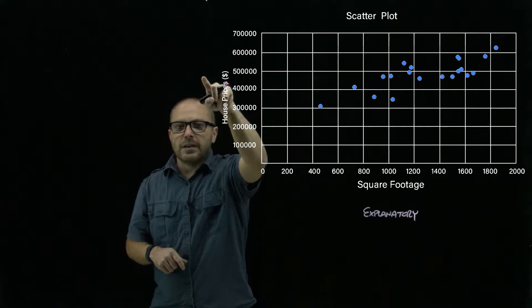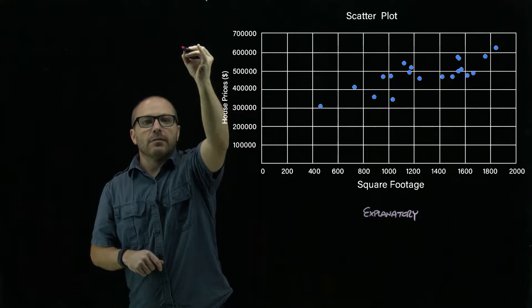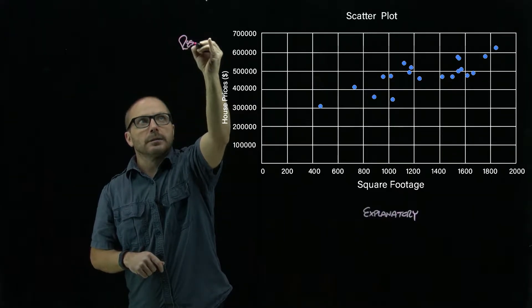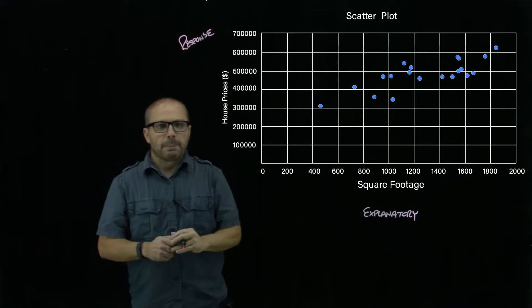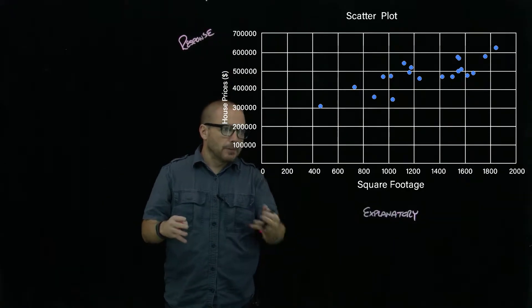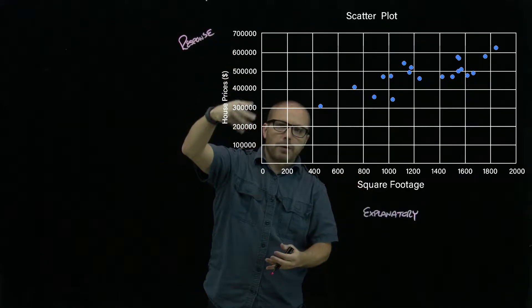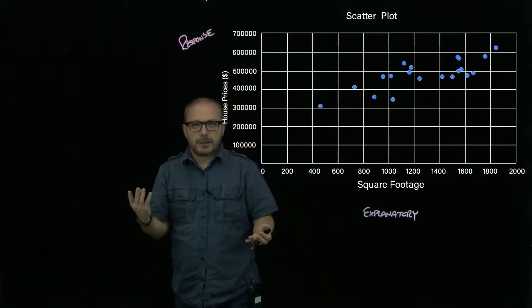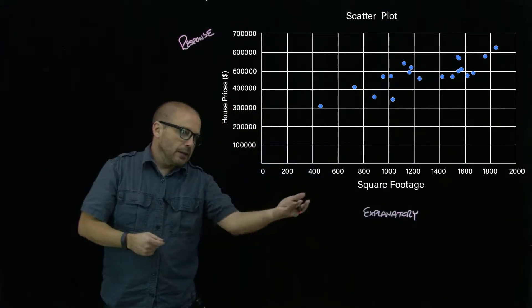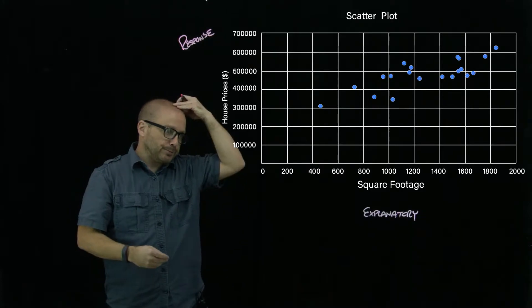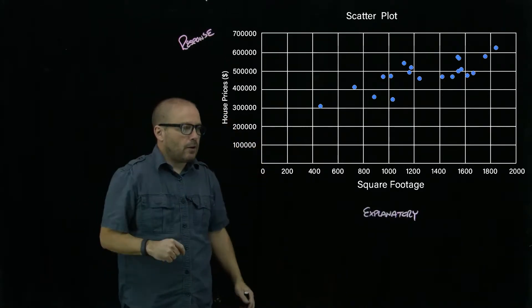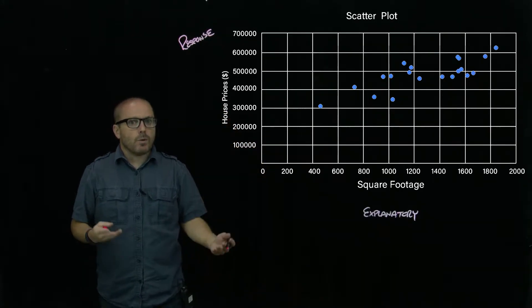Then on this axis we have the response. That's pretty typical: x-axis explanatory, response y-axis, because in algebra we typically think of the x-axis as the independent variable and then y depending on it.